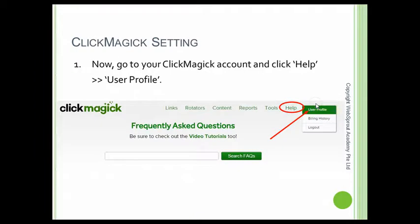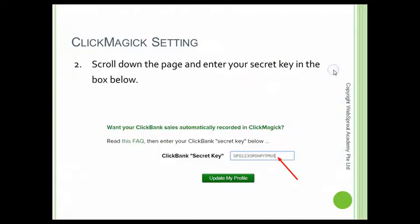That's what you need to do on ClickBank. After the ClickBank setting is done, go over to your ClickMagick account, click on Help, then click on User Profile. Scroll down the page, enter the secret key you just created in your ClickBank account, paste it in here, then click Update My Profile. Once you do that, the settings configuration is done.